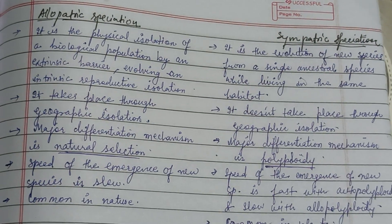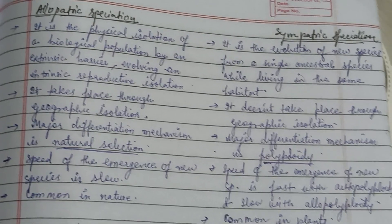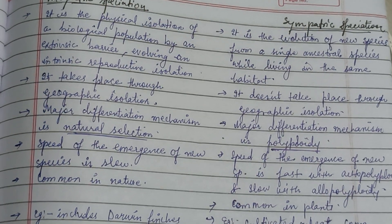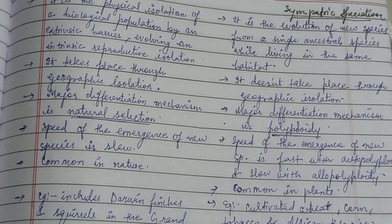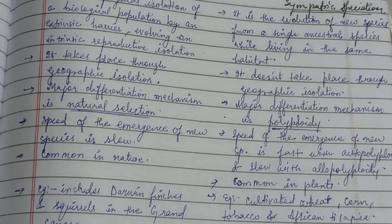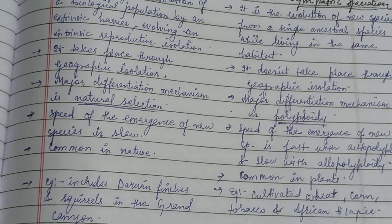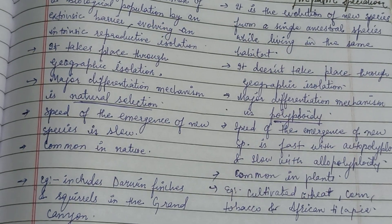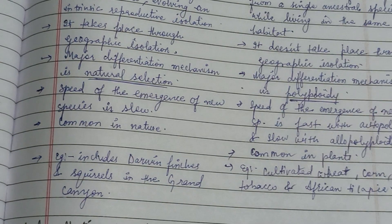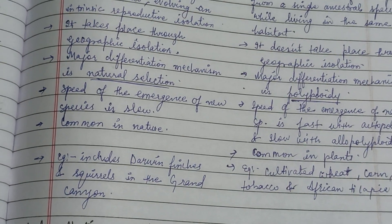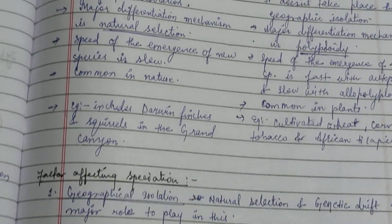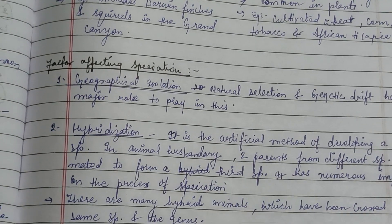There are some differences between allopatric and sympatric speciation. In allopatric, the mechanism of differentiation is natural selection, while in sympatric it is polyploidy. The speed of emergence of new species is slow in allopatric, but fast with autopolyploidy in sympatric. Sympatric speciation is common in plants, while allopatric examples include squirrels in the Grand Canyon and placental mammals versus marsupials in Australia.